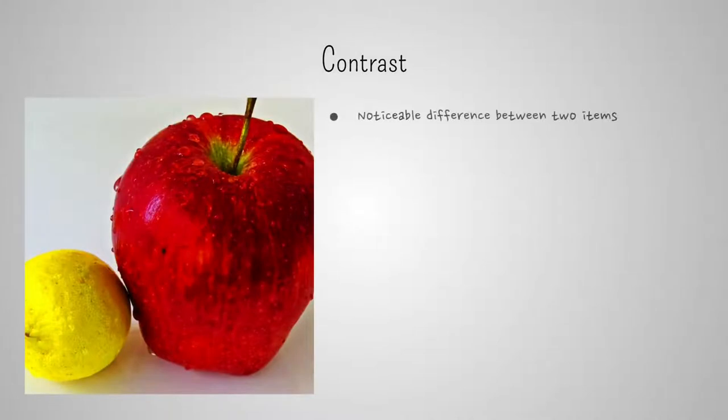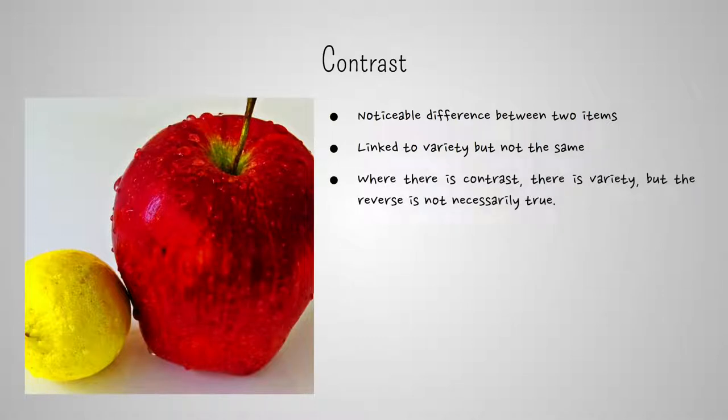Contrast is a noticeable difference between two items. It refers to the relative difference of certain characteristics between them. It's linked to variety, but it's not the same. Where there's contrast, there's variety. But the reverse is not necessarily true.